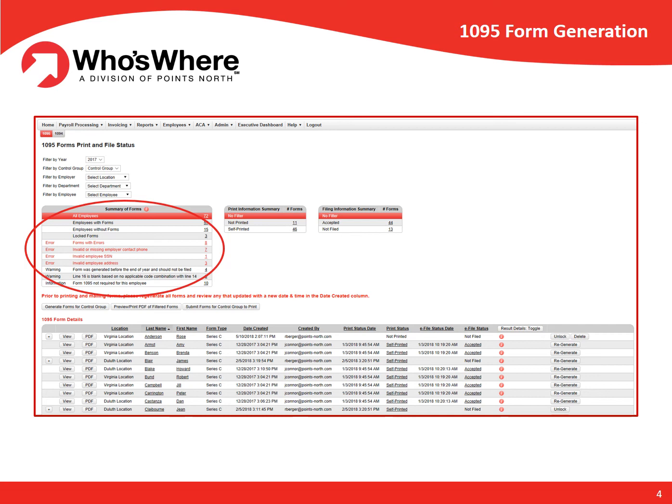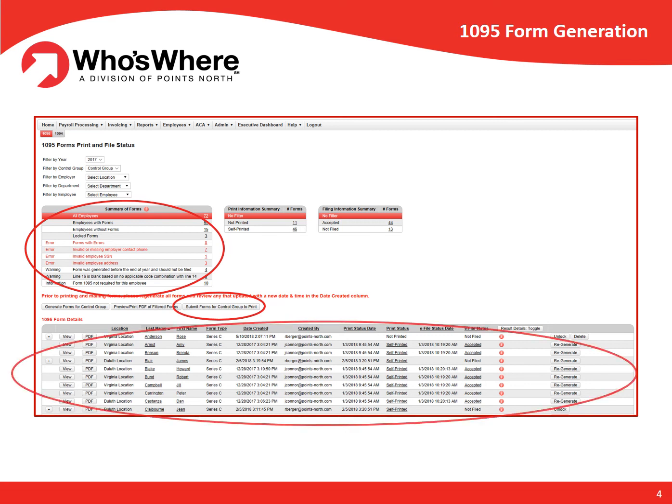Once all forms are ready and reviewed, the click of a button will initiate Who's Wear's print and mail service, which has the forms out to employees via the United States Postal Service within two business days. Who's Wear stores all mail dates, corrections, and e-filing statuses for future review.